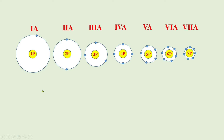So the atomic radius goes on decreasing in any period when we go from the left hand side to the right hand side. As we go towards the right hand side, the attraction between proton and electron is stronger, and that's why the tendency of donating electrons decreases.